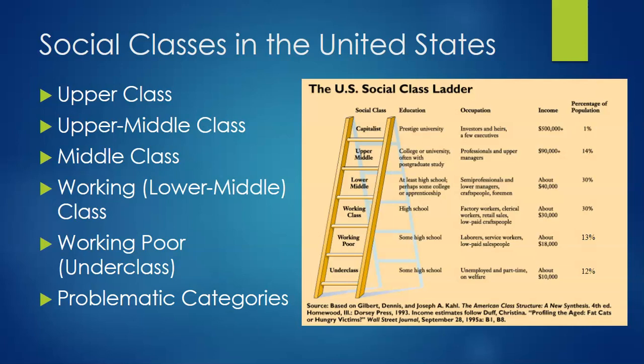The working poor constitute approximately 13% of the population. Members are generally not well educated; most have not completed high school and experience lower levels of literacy than other classes. They may also lack other work skills valuable in the job market. Typical occupations include unskilled temporary and seasonal jobs, including minimum wage jobs, housekeeping, day labor, and migrant agricultural work. The average income is around $25,000 a year. This group suffers from high rates of unemployment and underemployment, with some members receiving social welfare subsidies.